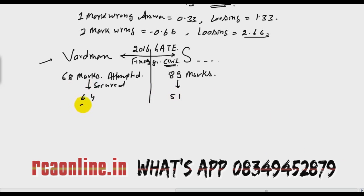Vardaman secured 64 and S secured 51. If you see the rank difference, Vardaman got around 340 rank, got selected in IISc Bangalore and two of the PSUs. And what happened to S? He got rank around 1700 and no selection, again doing the preparation.